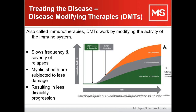On this graph from the Brain Health Time Matters initiative, for those with relapsing remitting MS, starting treatment upon diagnosis is likely to produce a better outcome than those who start disease modifying therapy a little bit later.